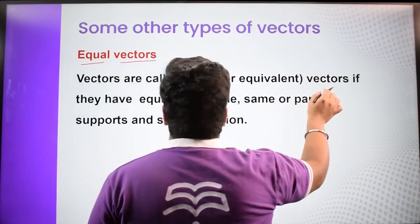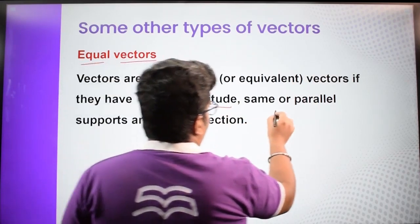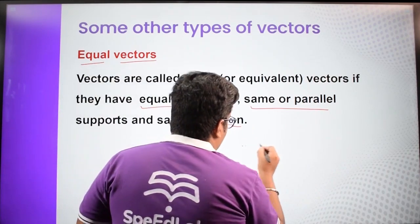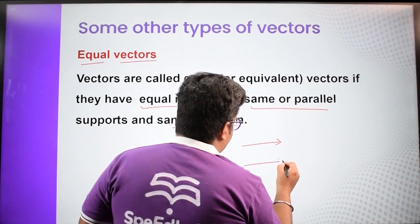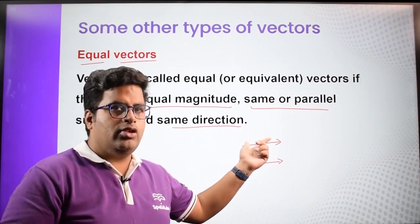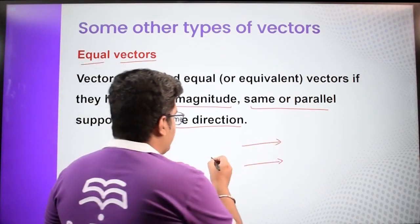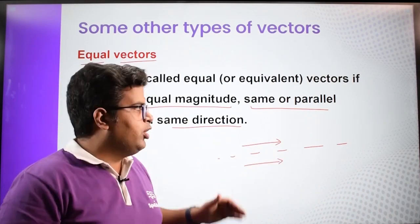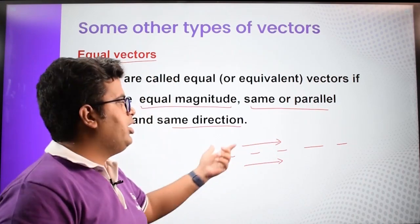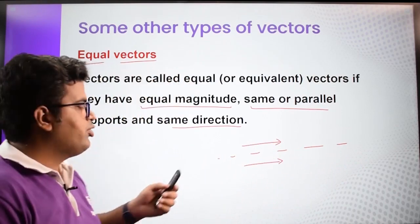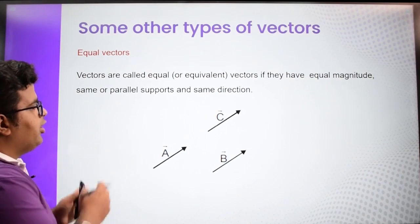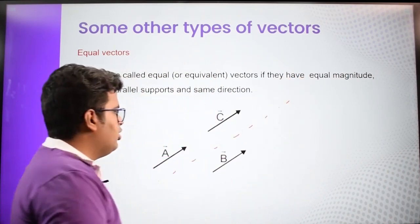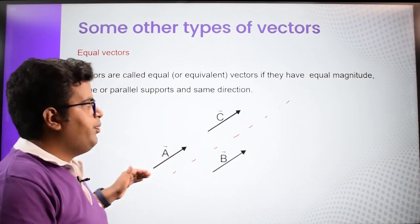Equal vectors are those which have equal magnitude, are on the same or parallel support, and have the same direction. For example, two vectors of the same length pointing in the same direction on parallel lines are equal vectors. Support is basically an imaginary line to which both vectors are parallel. From the diagram, vectors A, B, and C are all equal in magnitude, in the same direction, and have parallel support — so they are equal vectors.